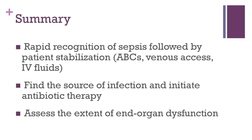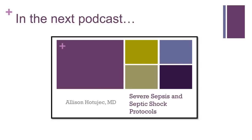In summary, the first step to management of sepsis includes recognition of the disease, followed by patient stabilization — in particular, the ABCs, venous access, and IV fluid resuscitation. This is followed by the search for possible sources of infection and initiation of appropriate empiric antibiotics. Finally, laboratory evaluation to assess the extent of end-organ dysfunction should be completed. We've covered the initial steps in management and workup of sepsis. In the next podcast, we'll discuss how septic shock and severe sepsis are managed, and we'll discuss the use of sepsis management protocols.